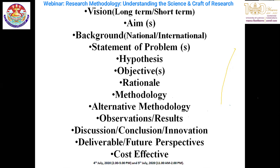Then consider why you should pursue that objective and how — that is your rationale. From there, look into the methodology, which should be specific depending upon your aim and objective. Alternate methodologies should also be decided, because if one methodology fails, you need alternate methods. Based on your methodology, you will get observations, which could be qualitative or quantitative, and those observations turn into results.